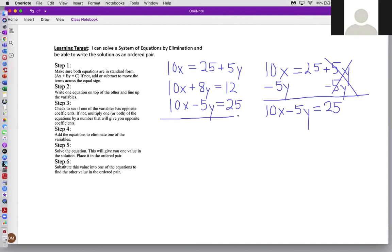Go ahead and hit pause. Tell me what you would do next. If you said step three, check to see if one of the variables has opposite coefficients, then you're absolutely correct. Now notice 10x and 10x, the second 10x is not opposite, it's the same. So notice the second part of step three says, if not, meaning if the variables don't have opposite coefficients, multiply one or both of the equations by a number that will give you the opposite coefficients. So to get the opposite coefficient of minus 10x, I need to take this second equation and multiply the whole thing by negative one.